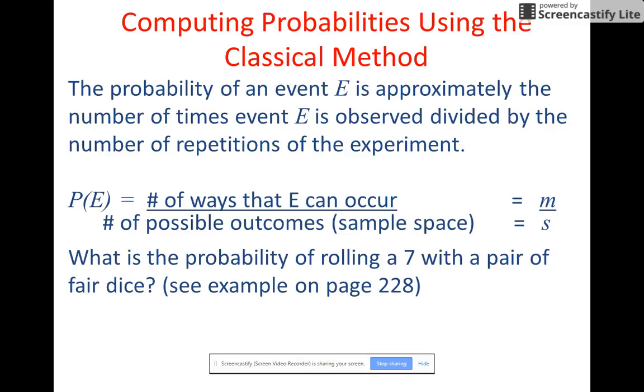Now, we can compute the probabilities using the classical method. So the probability of an event is approximately the number of times the event E is observed divided by the repetitions of the experiment. That's the empirical. But here is the classical method. The number of ways that E can occur divided by the number of possible outcomes. In other words, the sample space. So if we wanted to roll an even number, the number of ways that E can occur is three. There's three even numbers on a die. And the number of possible outcomes is six. So three divided by six would be one half or 50%.